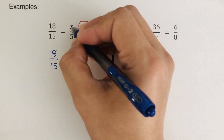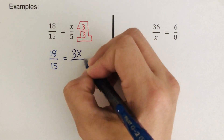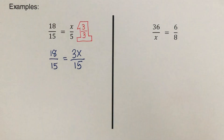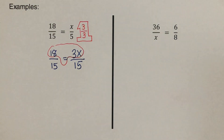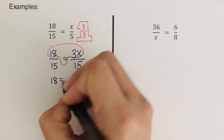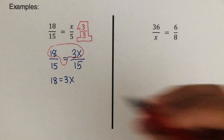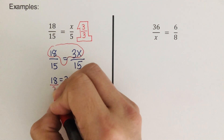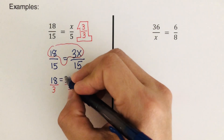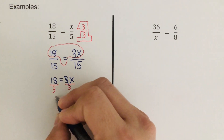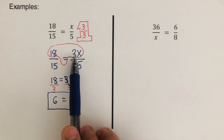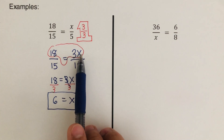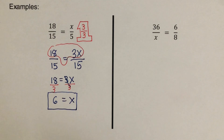That equals x times three, which is 3x, over 15. Both denominators are the same, so the numerators are also equal: 18 equals 3x. Dividing both sides by three, x equals six. Or simply: three times what number gives 18? That is six, so x equals six. Did you get the same answer?